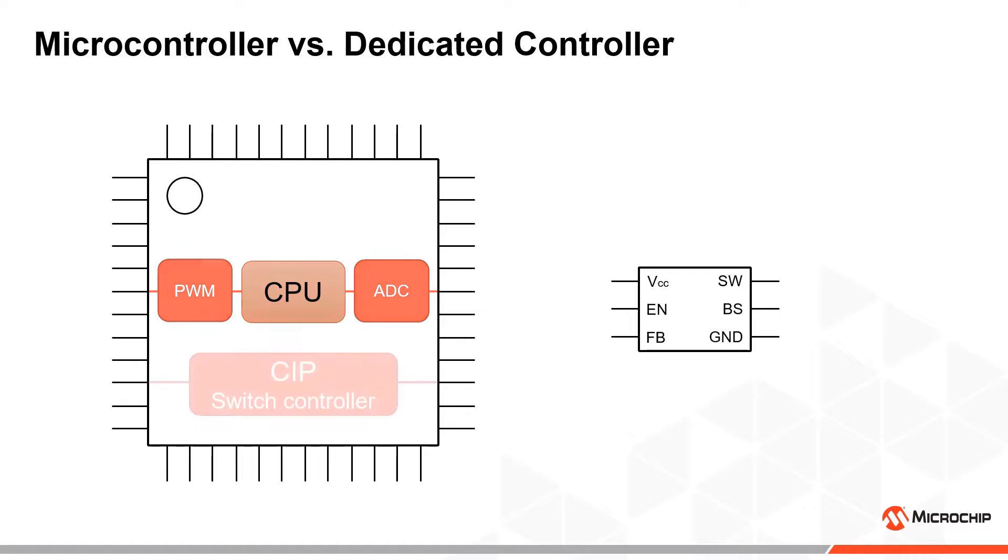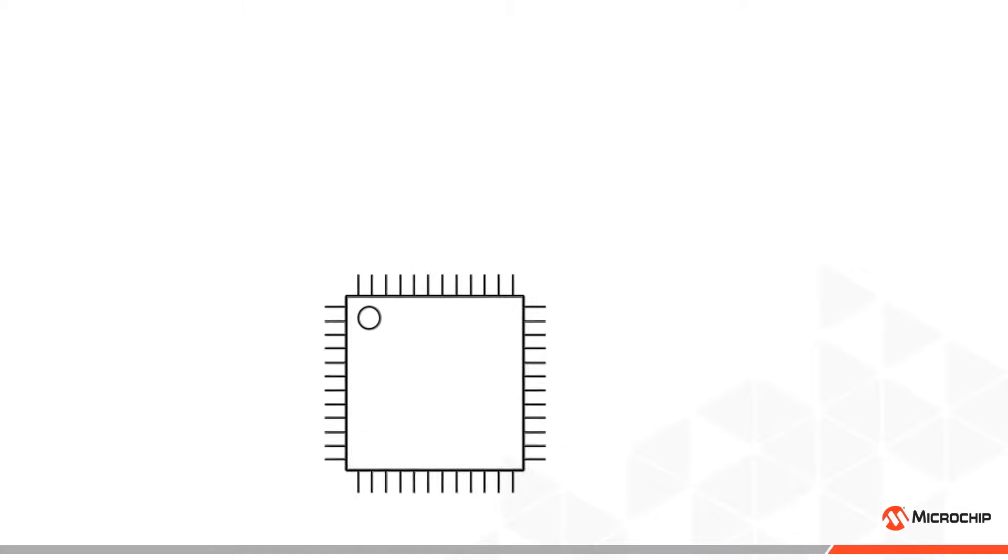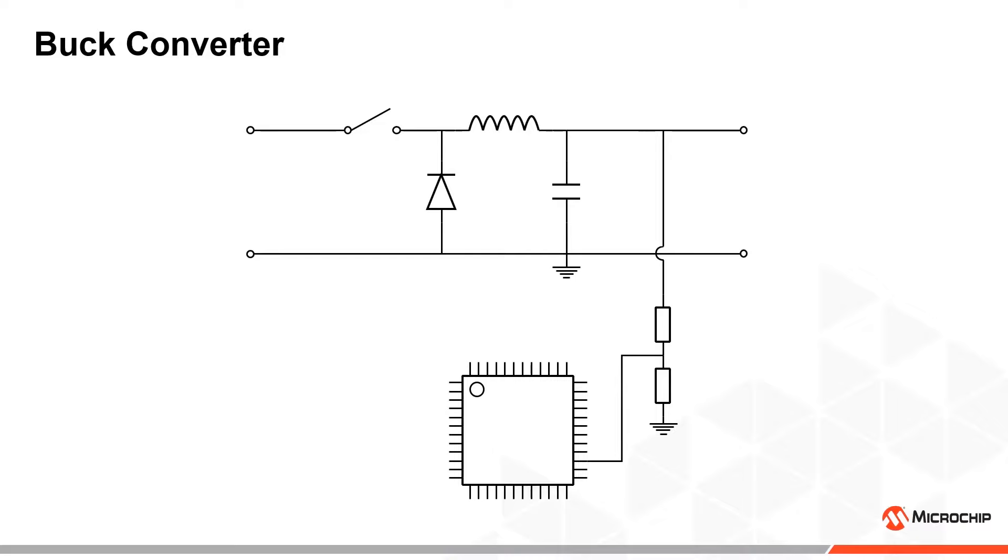However, using the core independent peripherals of the AVR, we can make a switching controller using only a few peripherals, leaving the core and other peripherals free. This reduces the number of active components in the circuit, resulting in lower cost and complexity.